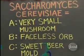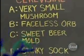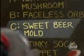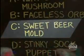Question number two: Yeast — the first Latin name, Saccharomyces cerevisiae, means — A. Very small mushroom, B. Faceless orb, C. Sweet beer mold, or D. Stinky soft puppet. Although they're all very, very good answers — except D, which is very stupid — the correct answer is C. Now, if you were thrown off by that whole mold thing, remember, this critter was christened before the Greeks or the Romans knew anything but wearing sheets and building roads.